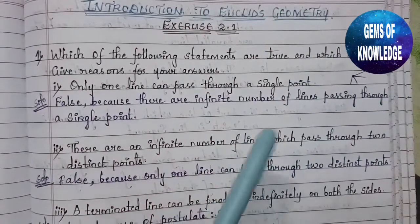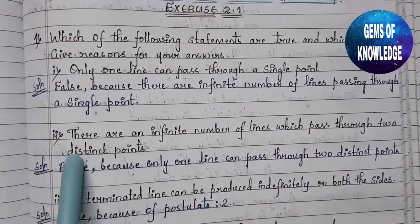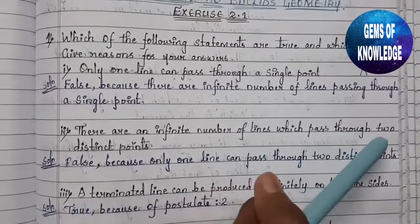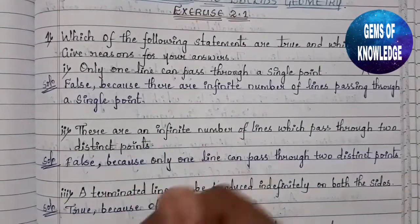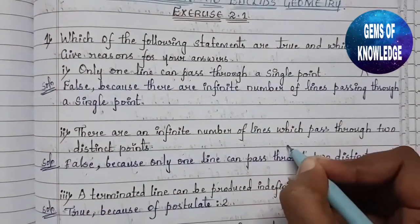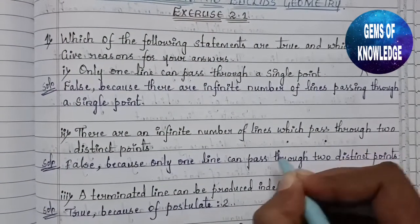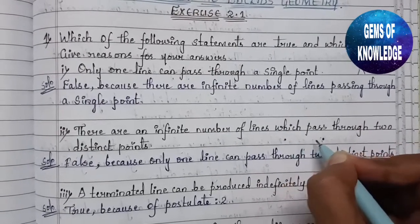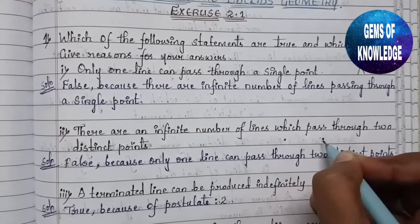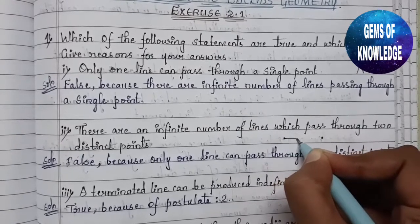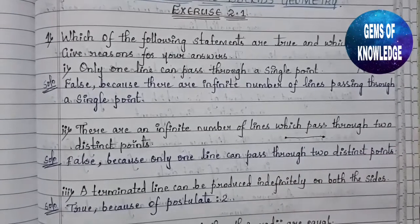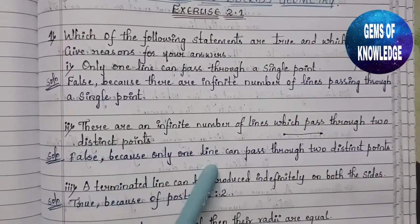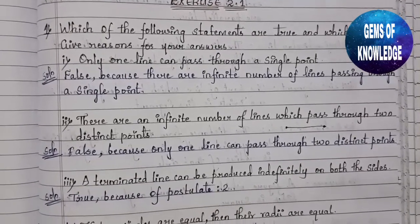The second statement is: there are an infinite number of lines which pass through two distinct points. Here are two distinct points at different distances. Can I pass infinite lines through these two points? No — I can pass only one line through two distinct points. So this is also false.